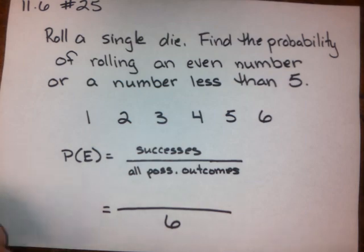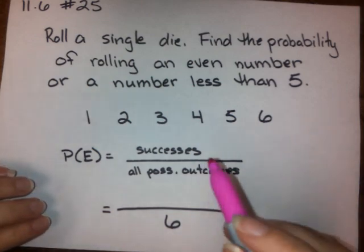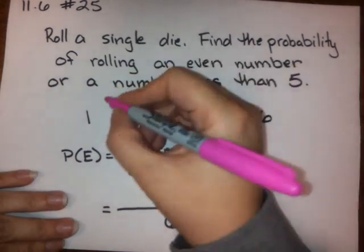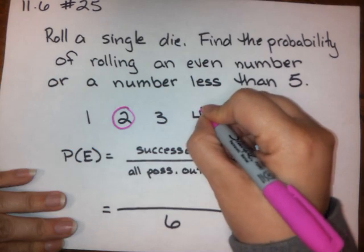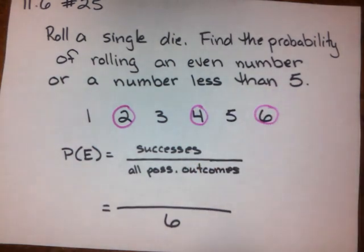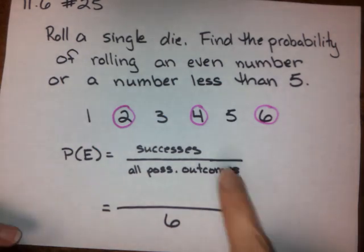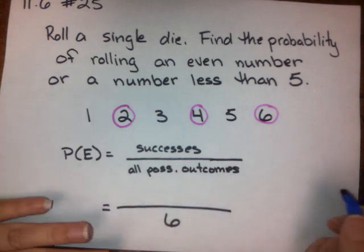So now we need to figure out what constitutes a success, and this is where it gets a little bit tricky. I'm going to circle all of the even numbers in pink because that's one of the things we're looking for — rolling an even number. I'm going to circle 2, I'm going to circle 4, and I'm going to circle 6. So those would be successes — that's 3 successes according to what they're looking for here.